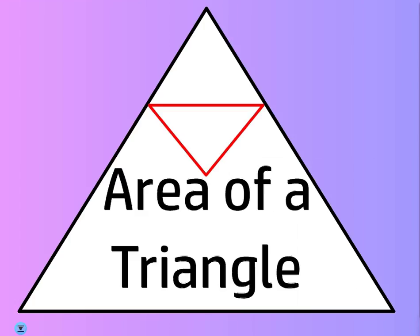So why does the area of a triangle equal one-half base times height? We're going to look at that before we go into a few problems. It's easy to apply, but we're going to show why it's true. If I had a triangle like this and I want to know what this area is, how can I figure it out every time for any triangle?